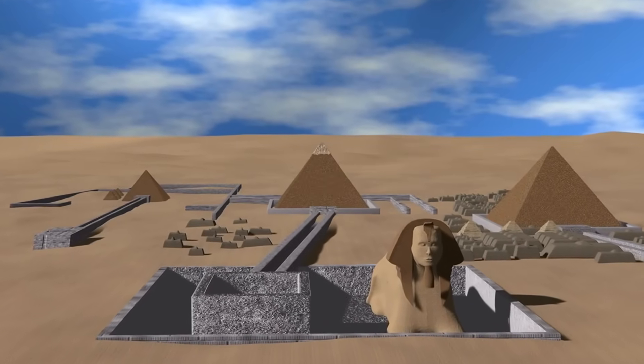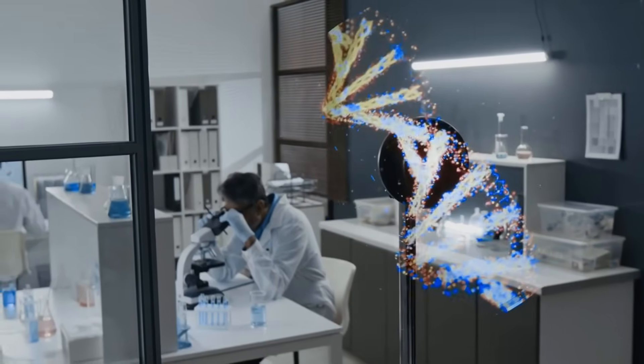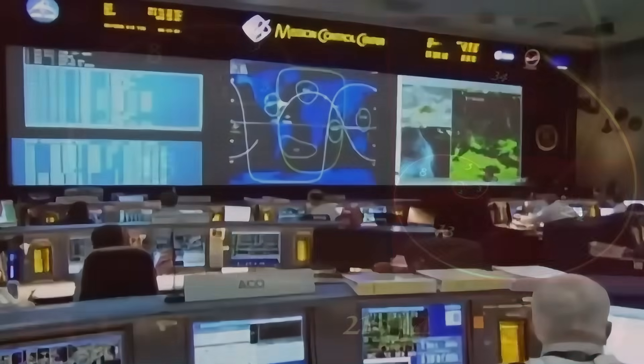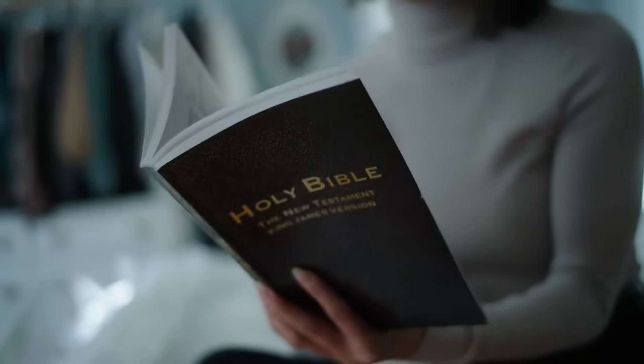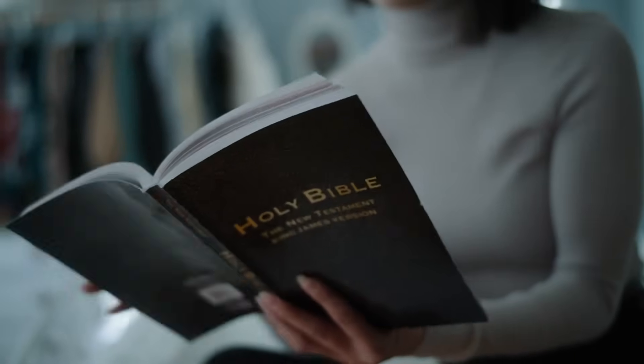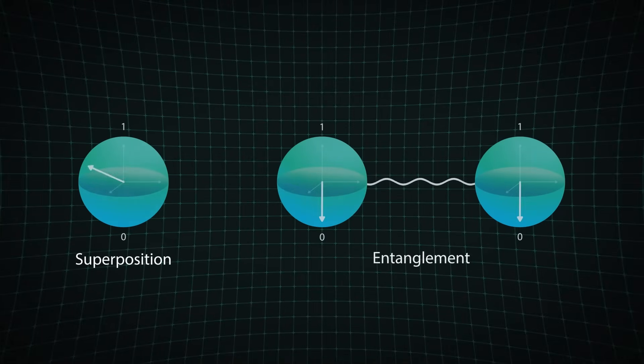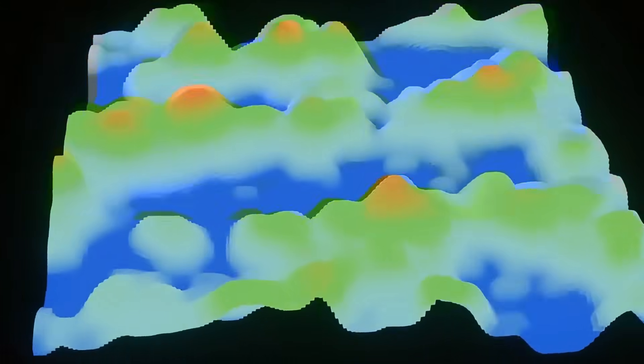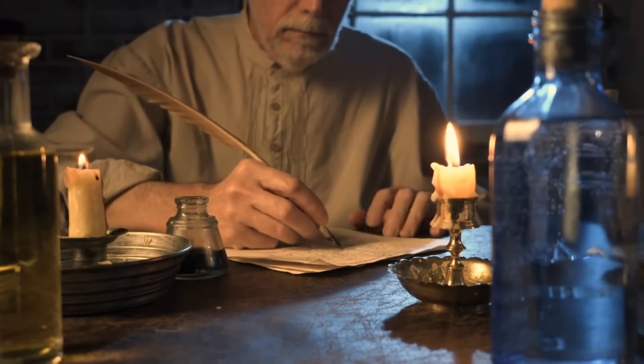Matthew 17:20 adds, If you have faith as small as a mustard seed, nothing will be impossible for you. In physics, a tiny interaction can cascade into a macroscopic effect. Quantum tunneling allows particles to pass through barriers, initiating reactions that power stars. A small quantum event can have universe-scale consequences. Likewise, a mustard seed-sized faith could trigger reality shifts.